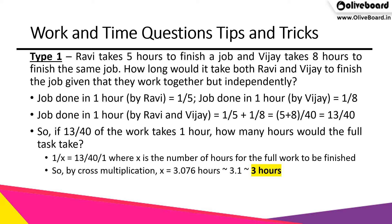The first type of question: Ravi takes five hours to finish a job and Vijay takes eight hours to finish the same job, so Ravi is faster than Vijay. How long would it take both Ravi and Vijay to finish the job given that they work together but independently? Following the fundamental principle, the job done in one hour by Ravi is 1/5, and for Vijay it is 1/8, since work per hour equals the whole task divided by the number of hours.